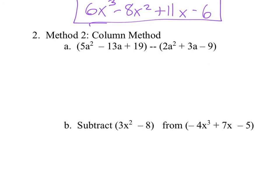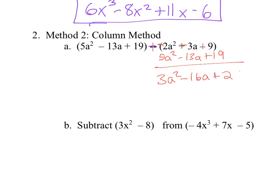That's just regular subtraction — turn it into addition by making it a negative and changing all the signs. Now I can stack them: negative 2a squared plus 5a squared is 3a squared; minus 3a and minus 13a is minus 16a; plus 9 and plus 19 is plus 28. That's my final answer.